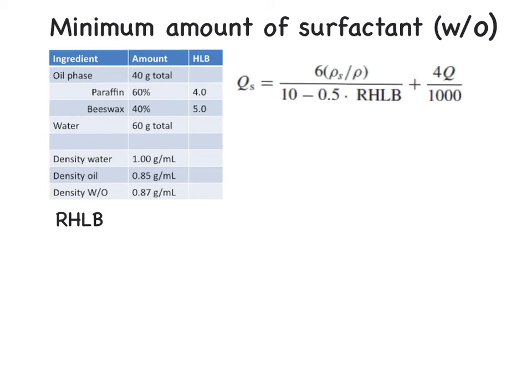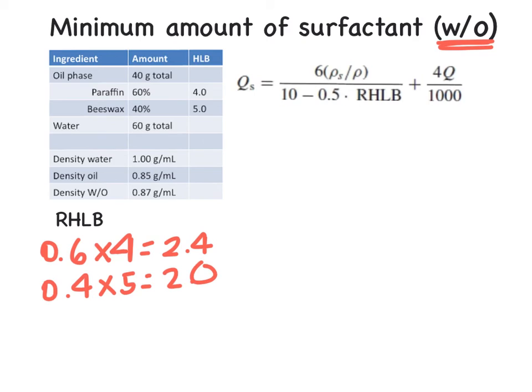We'll do another example since students are having difficulty with these calculations. This time we'll be calculating for the minimum amount of surfactant we need to form a water in oil emulsion. So we've changed that. We'll start with, again, calculating our RHLB of the oil phase. So we again have a fraction of 0.6 for paraffin times the HLB of 4 gives us 2.4. For the beeswax, we have a fraction of 0.4 times the HLB of 5 gives us a value of 2.0. So the combined RHLB is going to be equal to 4.4.